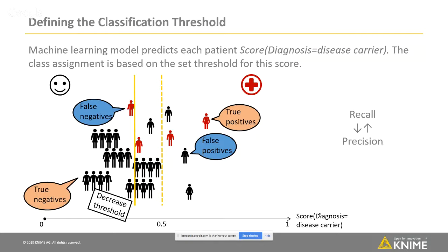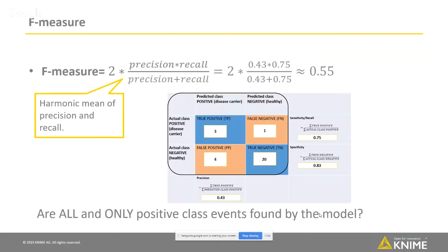An alternative to reporting recall and precision as a pair is to use a statistic that combines them — it's called the F-measure, which is the harmonic mean of precision and recall. It is harmonic because it gives less weight if one of these measures — precision or recall — is remarkably higher than the other, like recall is in this case. So F-measure tells if the model detects all, given by the recall, but only positive class events. This F-measure concludes the class statistics introduced in this webinar.